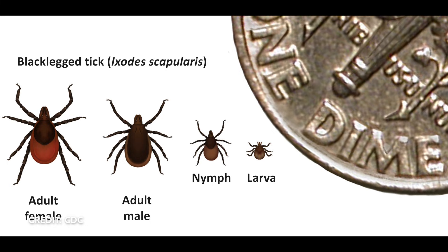Here's a summary of the sizes again against a dime. The big female causes about a quarter of the cases of Lyme disease. The smaller male is mostly dark brown and doesn't often transmit Lyme disease. The baby nymph causes about three-quarters of all cases of Lyme disease. And the larva, the tiny newborn tick, doesn't transmit Lyme disease at all. That little nymph causes most of the problems, which is why many people don't recall ever seeing a tick, because they're just so tiny.